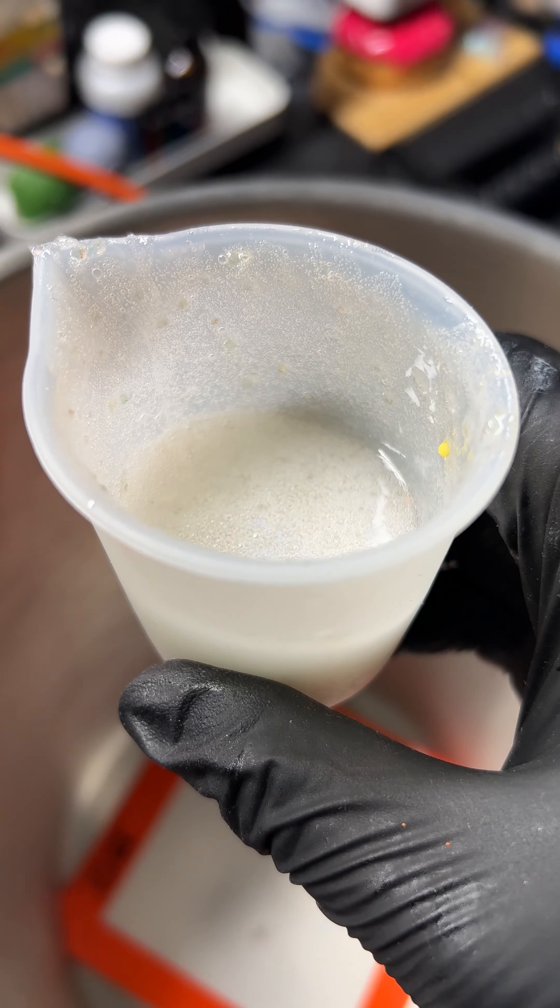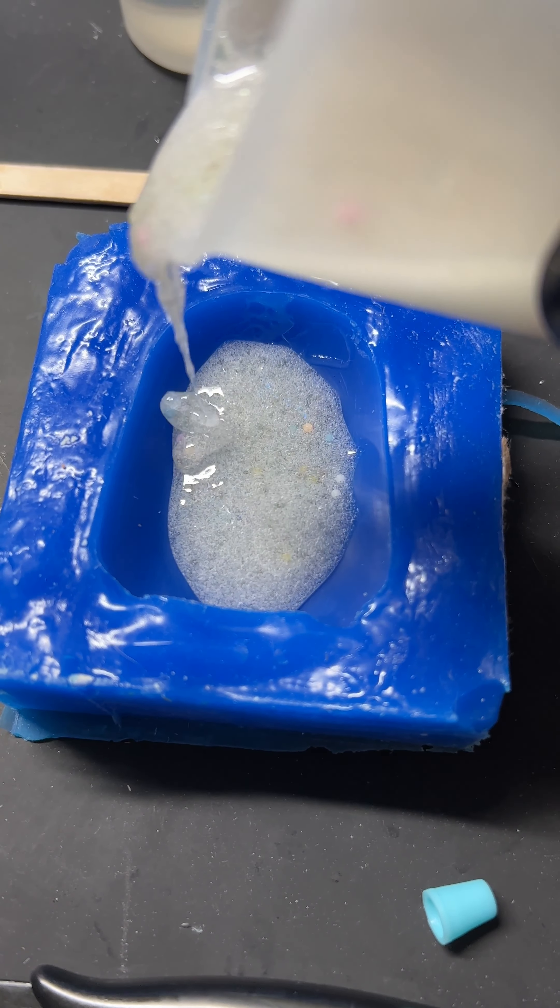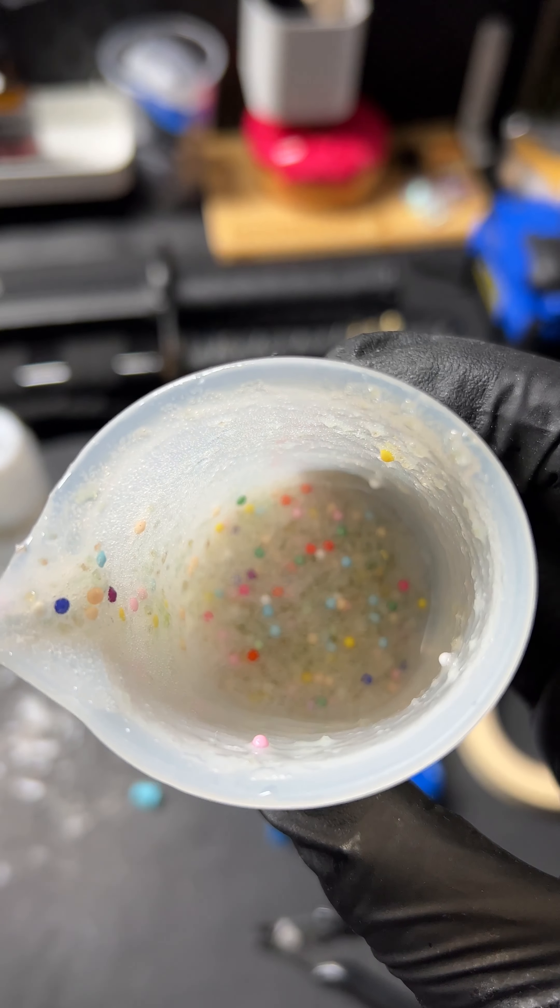We're going to pour this creamy, foamy, off-white frothiness into the mold. Je mange mousse mousse mousse mousse. It's hard to see, but the tiny little balls are peeking through, but it looks so cool.